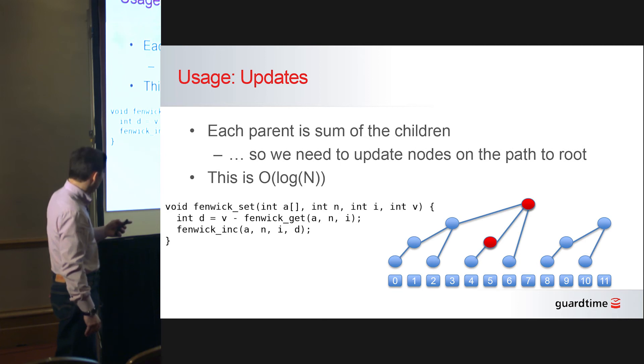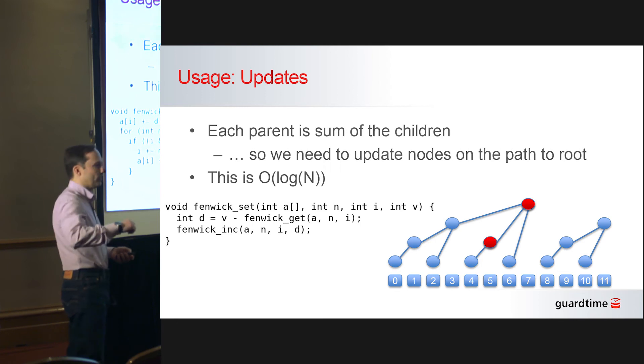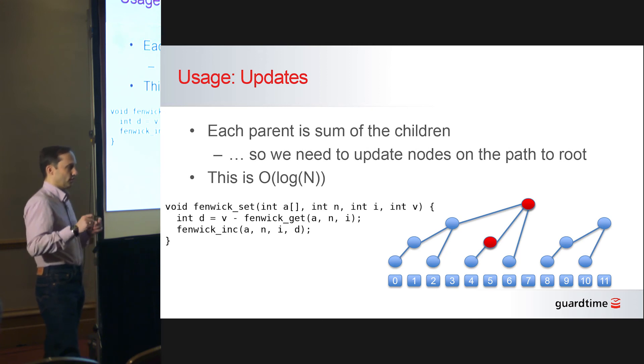Now, actually what this code here does, as the name of the function implies, it increments the value of the array. And the simplest way to assign a new value into an element of your original array is to read using the function from two slides back the original value, then compute the difference of what you want the new value to be to the original value, and then do update of the value because applying deltas to this tree is easier and cheaper than just pushing a new element into this tree.